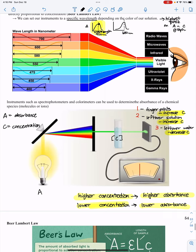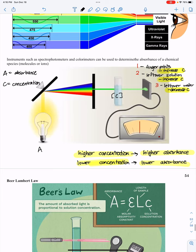Instruments such as spectrophotometers and colorimeters can be used to determine absorbance. Light goes through my solution here that has a specific concentration, and then it comes out in the instrument and it's read as a specific absorbance.